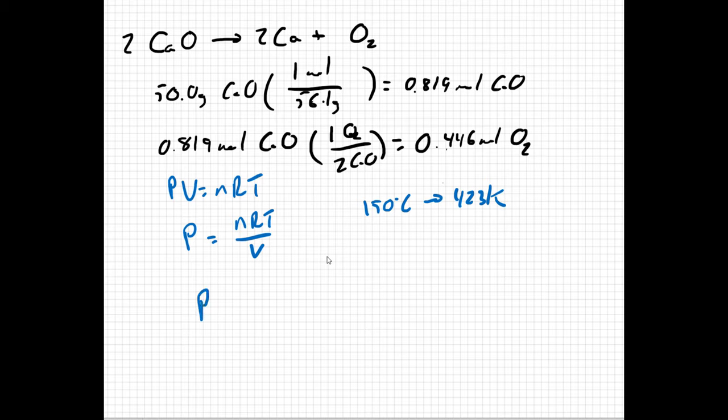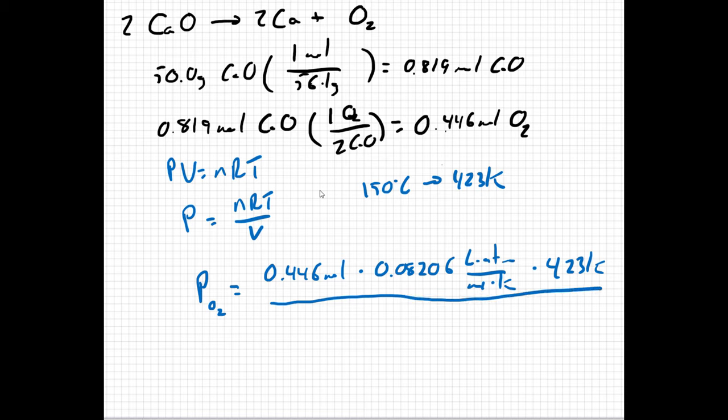So my pressure of the oxygen gas is going to equal the moles of oxygen gas, which we know to be 0.446 moles, times the ideal gas constant, 0.08206 L times atmospheres divided by moles times Kelvin, times my temperature, which we converted to 423 Kelvin, all divided by the volume, which is 26 liters. So I can check: moles cancel out, liters cancel out, Kelvins cancel out, and I'm left with atmospheres. So when I'm done, my pressure of the oxygen gas equals 0.595 atmospheres.